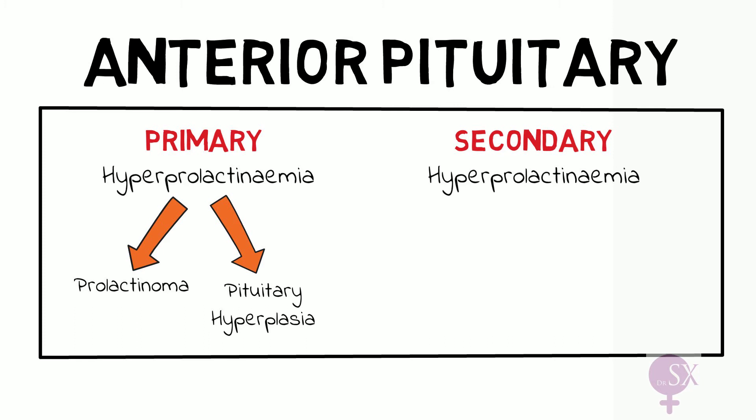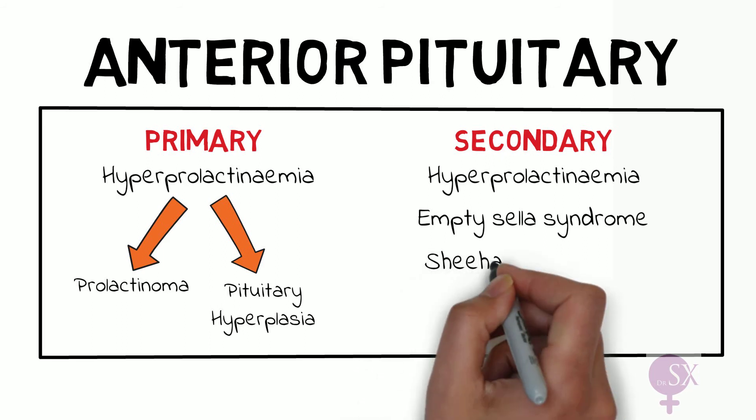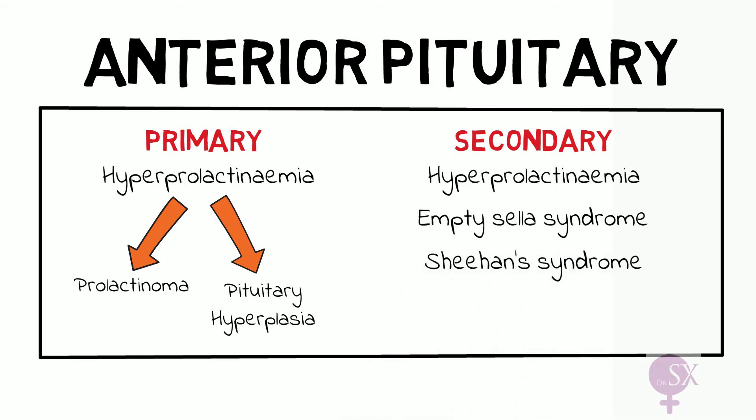Some rare anterior pituitary causes include empty sella syndrome, where the pituitary gland shrinks resulting in hypopituitarism. We also have Sheehan syndrome, where infarction of the pituitary occurs secondary to postpartum haemorrhage and shock, again resulting in hypopituitarism.